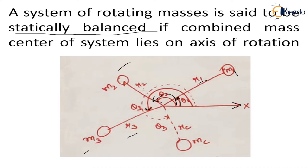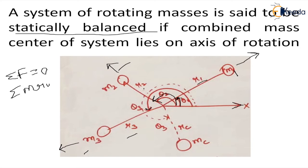This system will be statically balanced if the summation of forces acting on the system is equal to zero. That means the resultant of the centrifugal forces acting radially outwards on all three masses — m1·r1·ω² + m2·r2·ω² + m3·r3·ω² — is equal to zero. Since omega is constant for the whole system, summation of mr should equal zero. If this condition is satisfied, the center of mass lies on the axis of rotation.